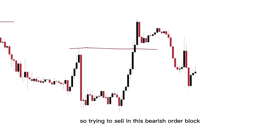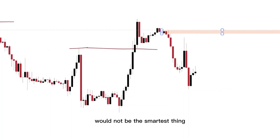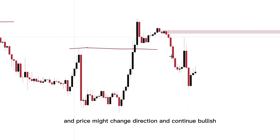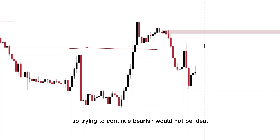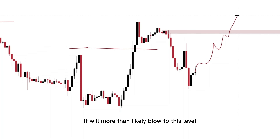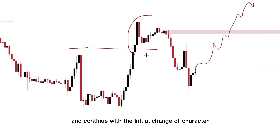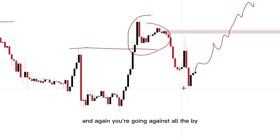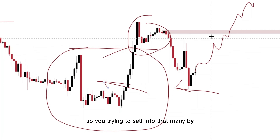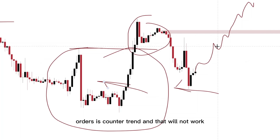So trying to sell in this bearish order block would not be the smartest thing. Why would you not want to sell when price comes to this order block? Because price is changing character and price might change direction and continue bullish. So trying to continue bearish would not be ideal. When price does reach this level, it will more than likely blow through this level and continue with the initial change of character. You're going against all the buy orders accumulated within our shelf — that will not work.